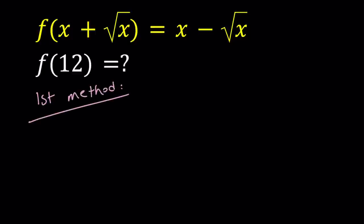For our first method we're going to try to find the general expression for f of x. I'm going to use a different variable here — I can't set it equal to x, so let's use y. Let's set x plus square root of x equal to y, and then we're going to try to find out how x can be expressed in terms of y. So our assumption basically means that x plus square root of x is equal to y.